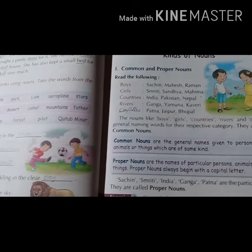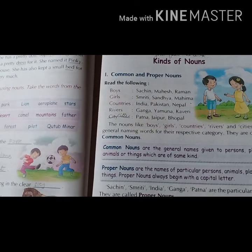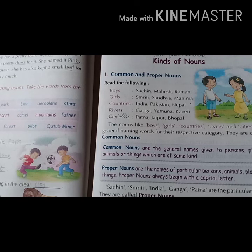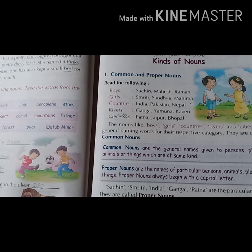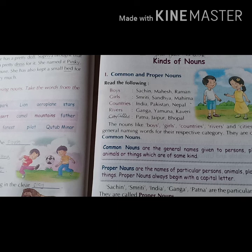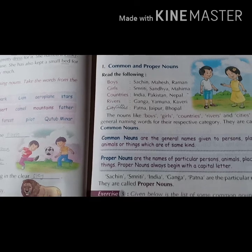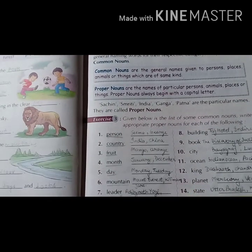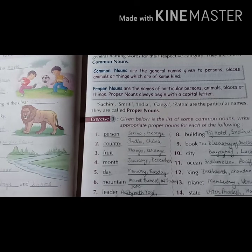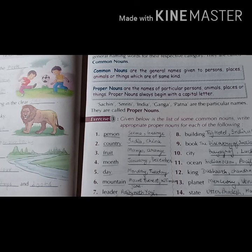Now we will discuss about kinds of nouns. So here you can see, first is common and second is proper — that means common noun and proper noun. Common nouns are the general names and proper nouns are the particular names of a person, place or thing. Suppose that in this exercise, some common nouns are there and we have to write the proper noun.